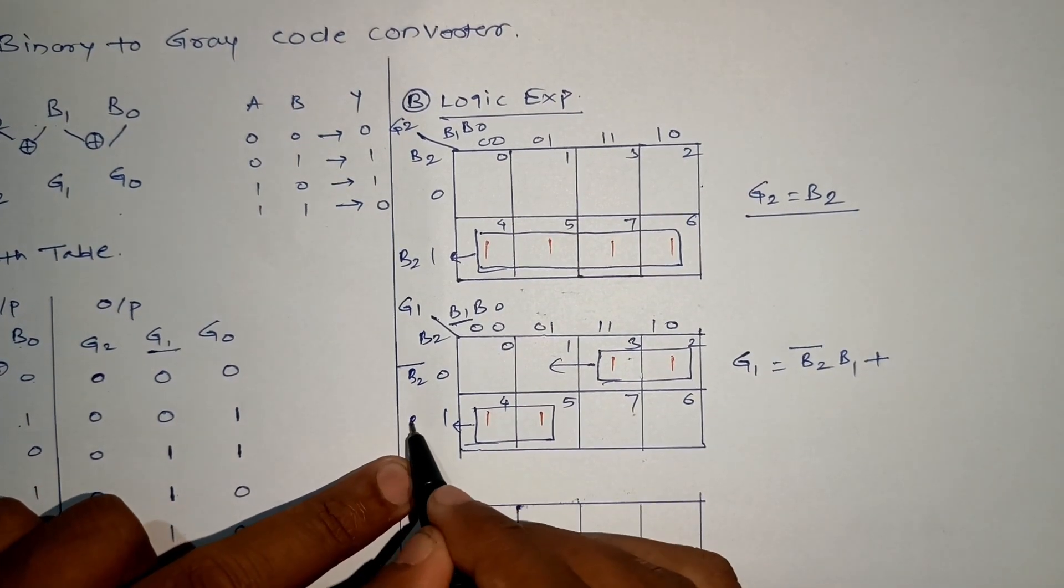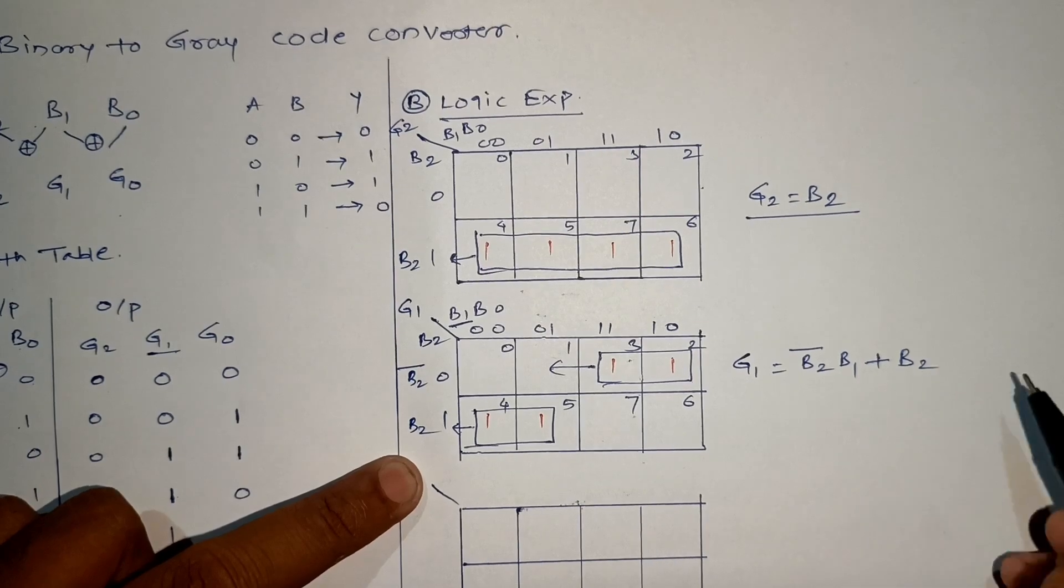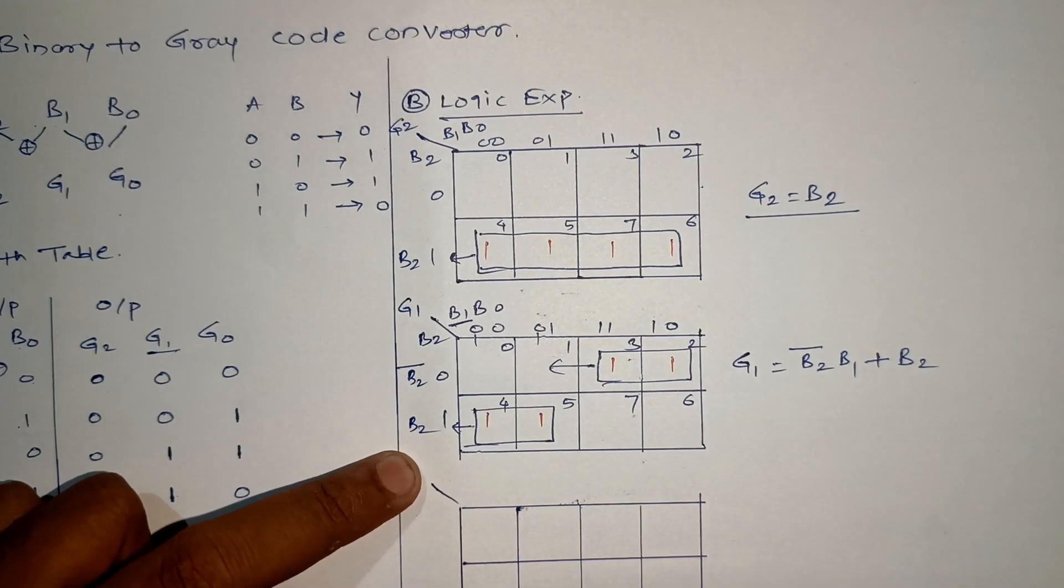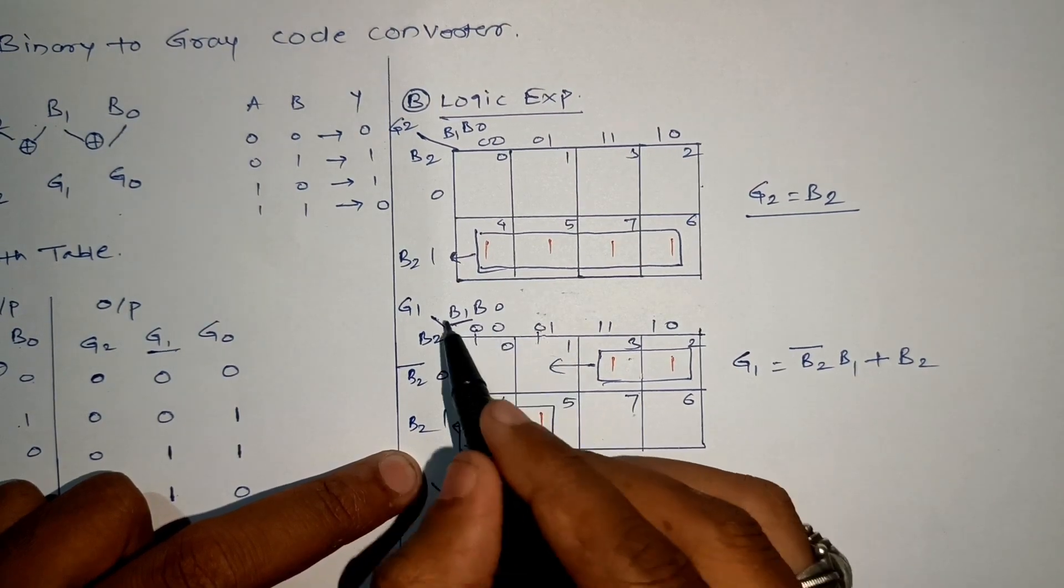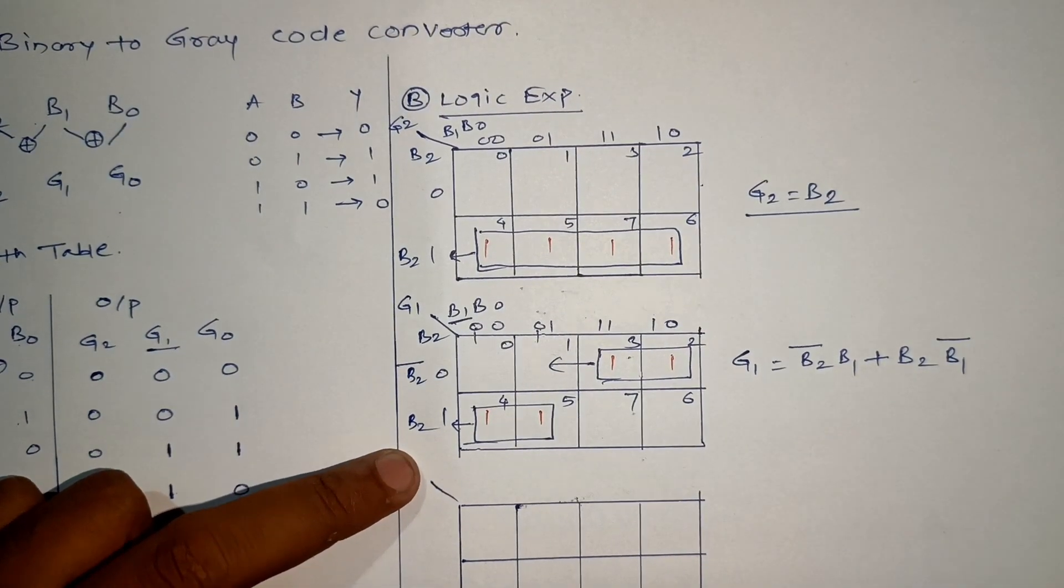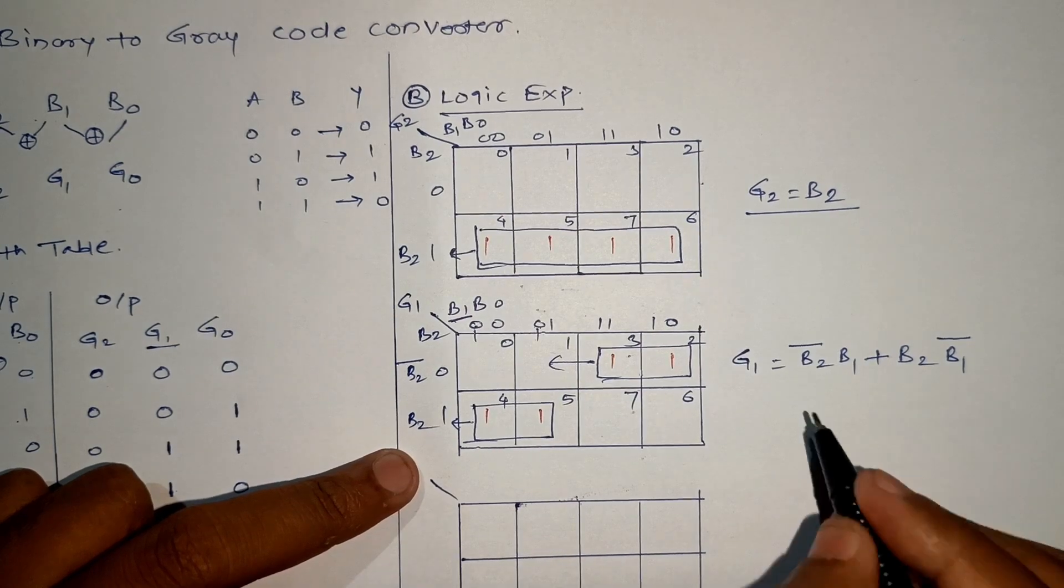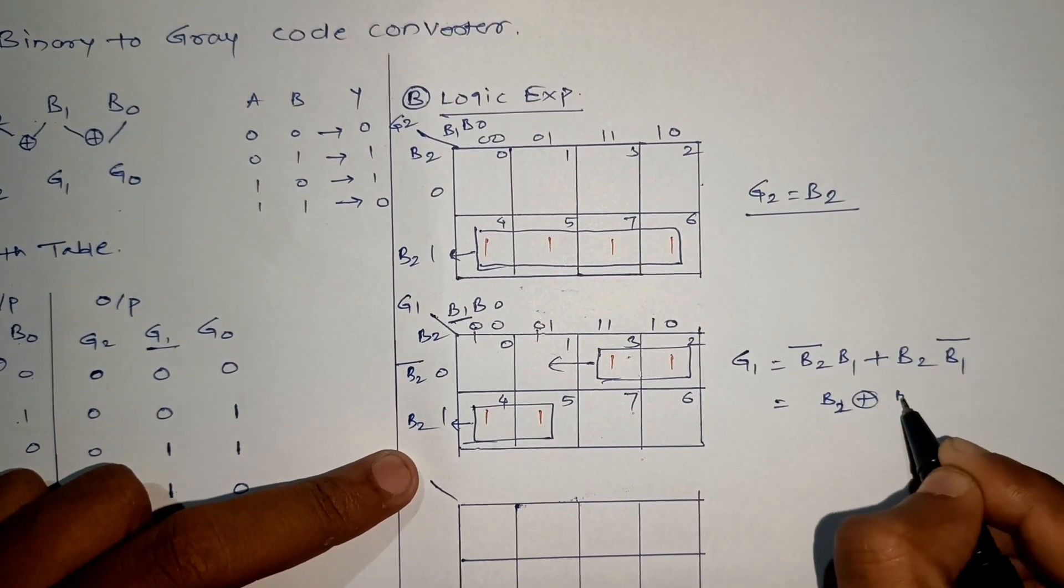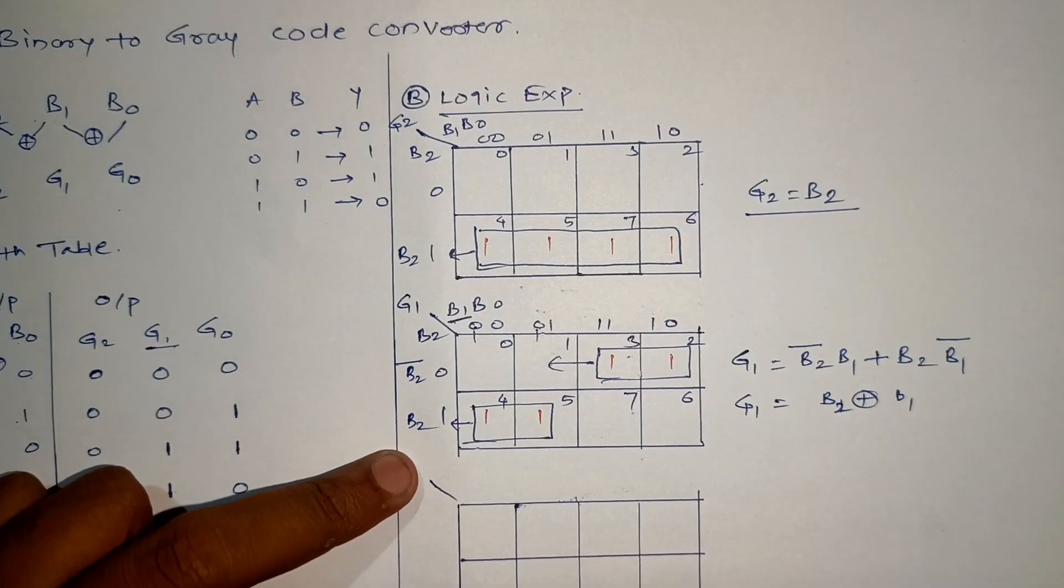For 4, 5, B2 is 1 uncomplimentary, so B2, and if we see from top, 0 can be taken common, which corresponds to B1 bar. Now if you see this expression, it is as good as B2 XOR with B1, which is the XOR gate property.